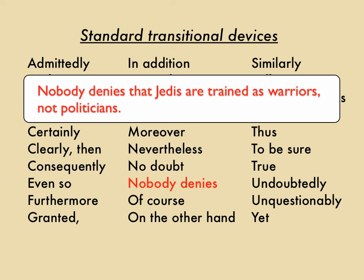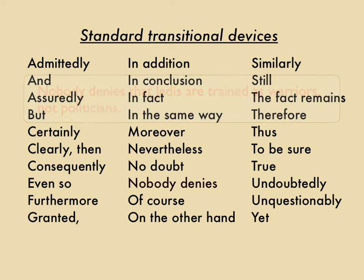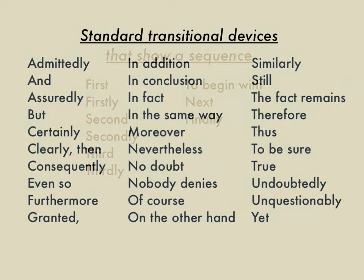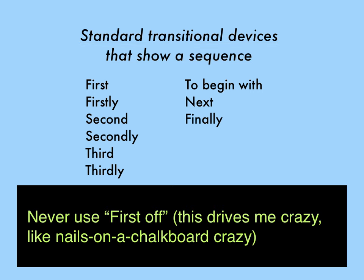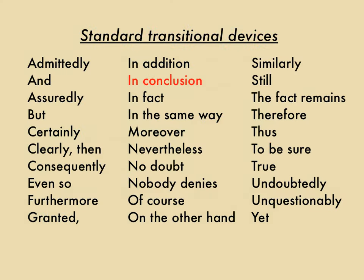You'd use 'nobody denies' when you're going to concede a point contrary to your thesis. Easiest of all, you may also use standard devices that show sequence: first, firstly, second, secondly, third, thirdly, to begin with, next, and finally. Note: never use the slangy 'first off' in an academic essay. Also, try to avoid 'in conclusion' because it's overused.